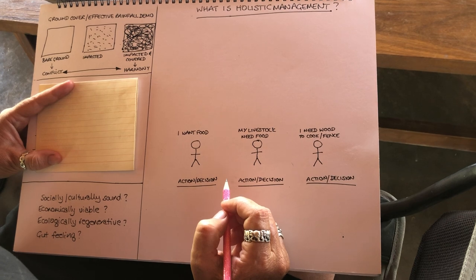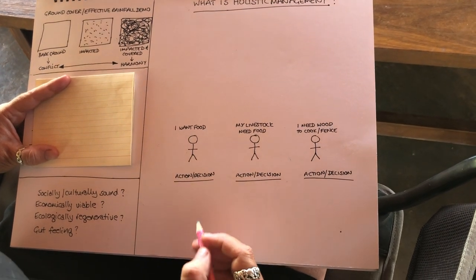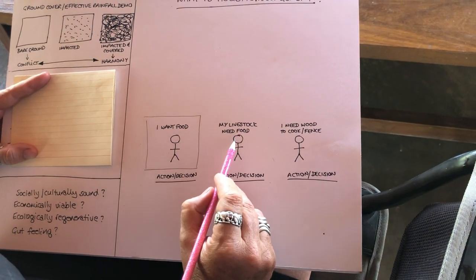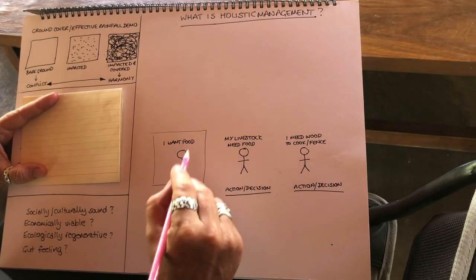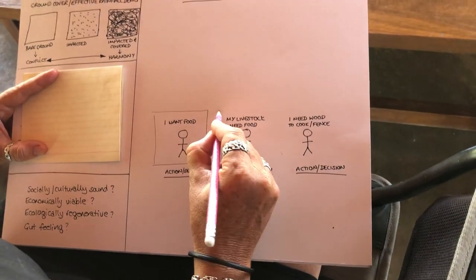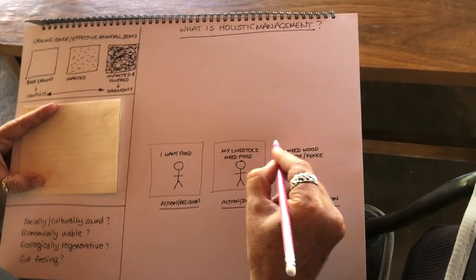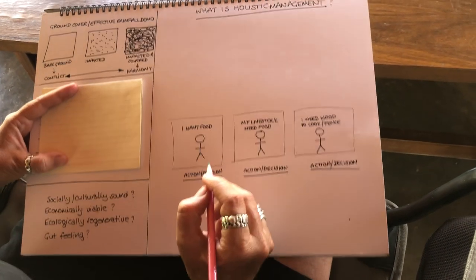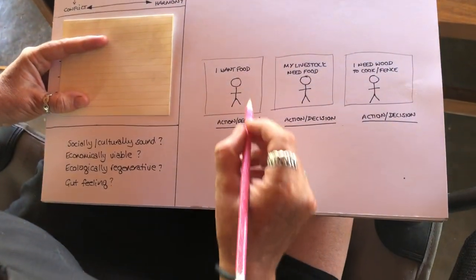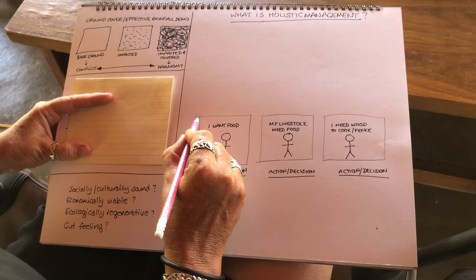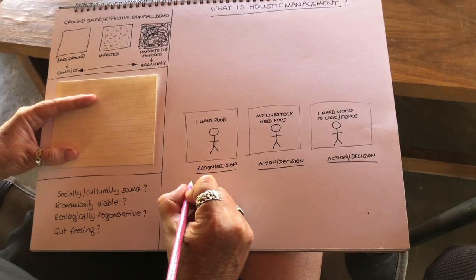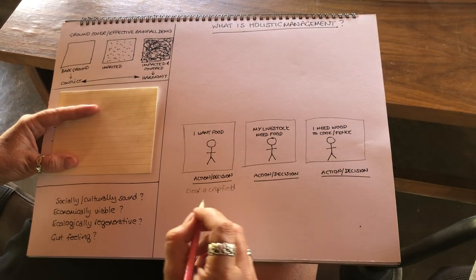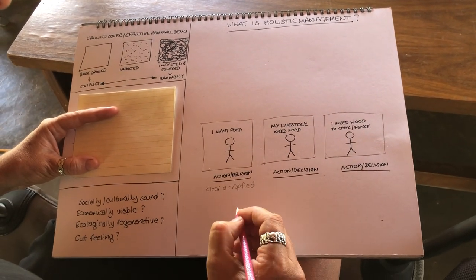If you live in a village and think 'I want food' — this is how all of us make decisions. The person thinks in a box: just 'I want food, my family wants food.' It's an immediate decision. Similarly: 'my livestock need food,' 'I need wood to cook or make fencing.' We think very linearly and for the here and now. So what actions would you take in a community if you wanted food? One of the first would be to clear a crop field.